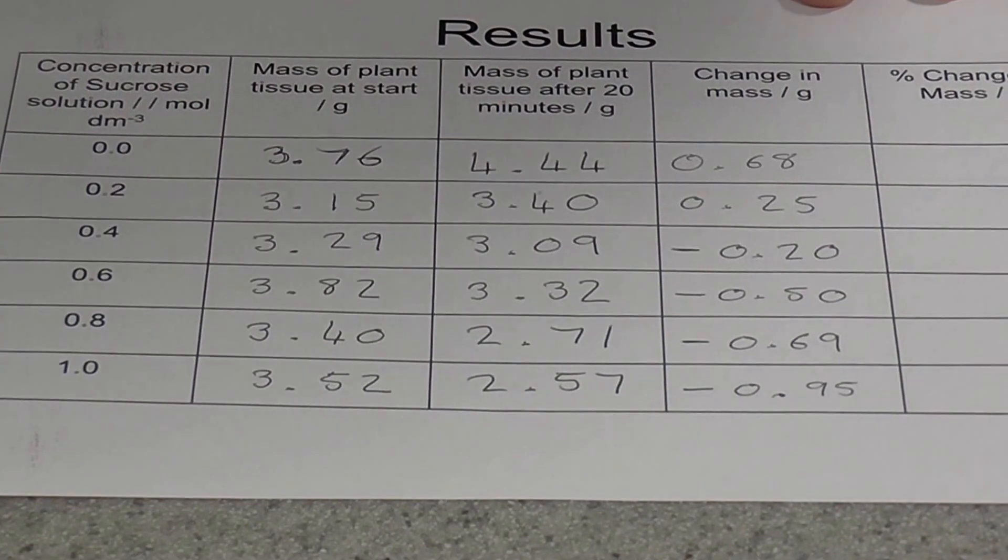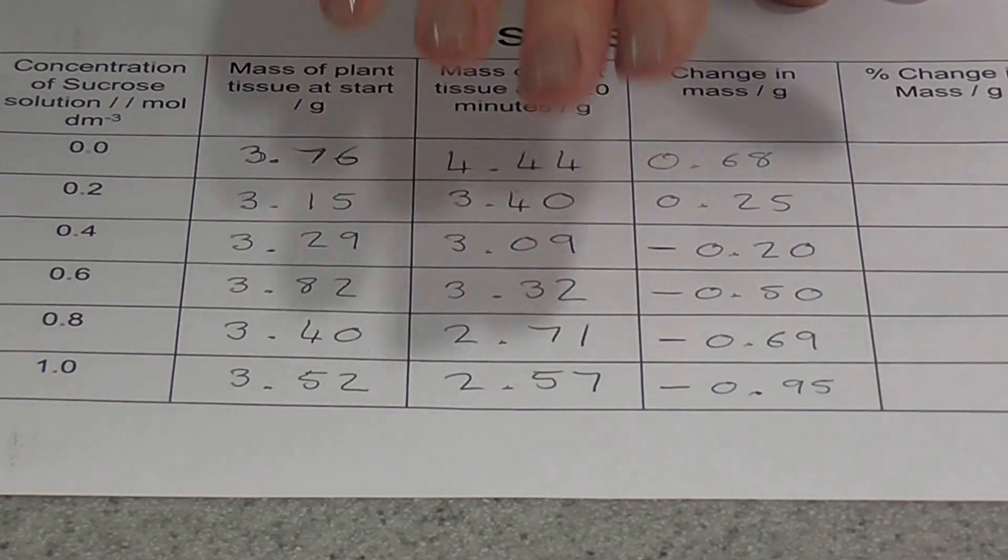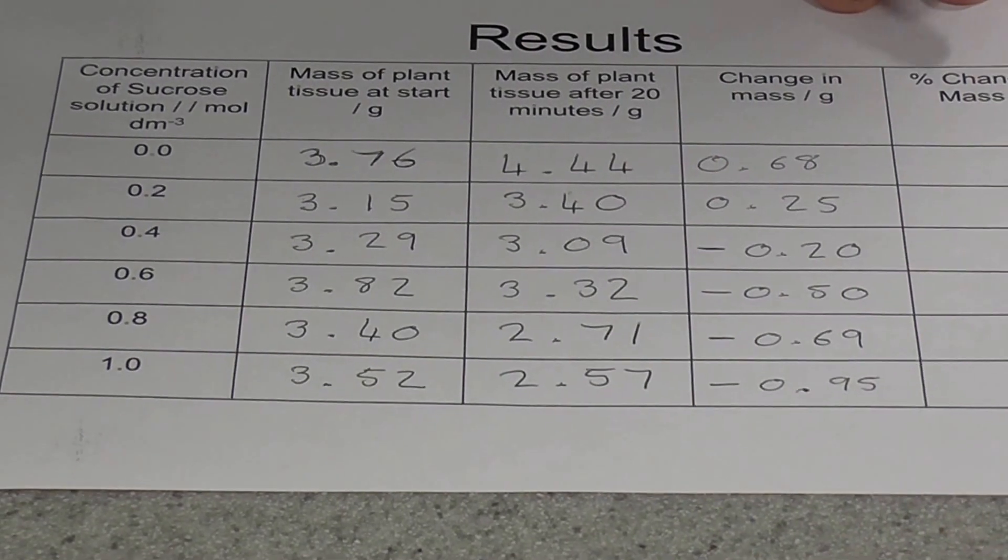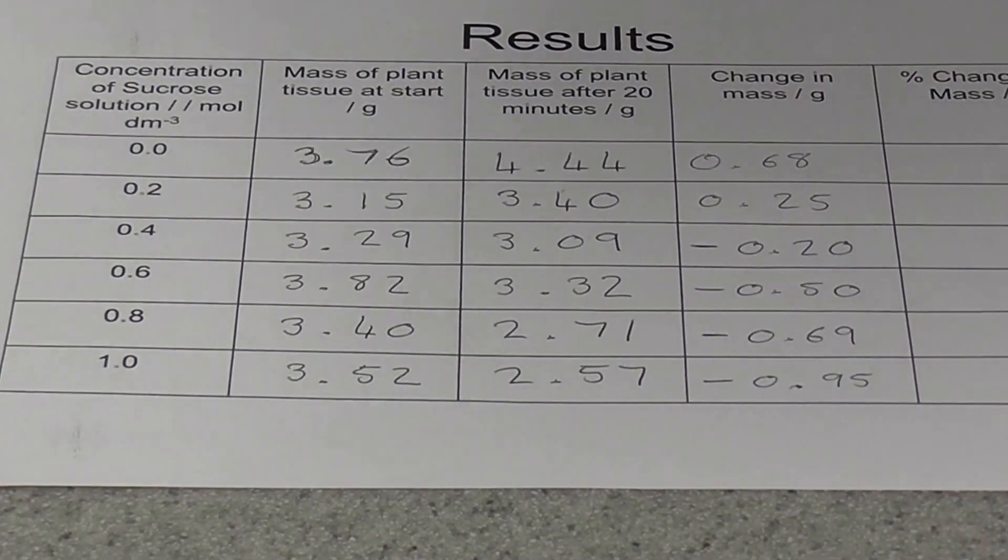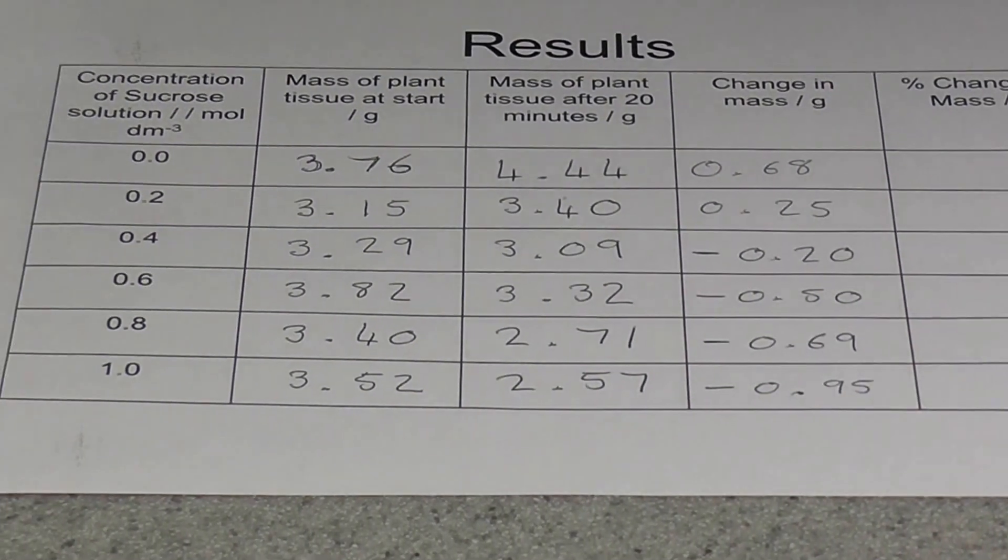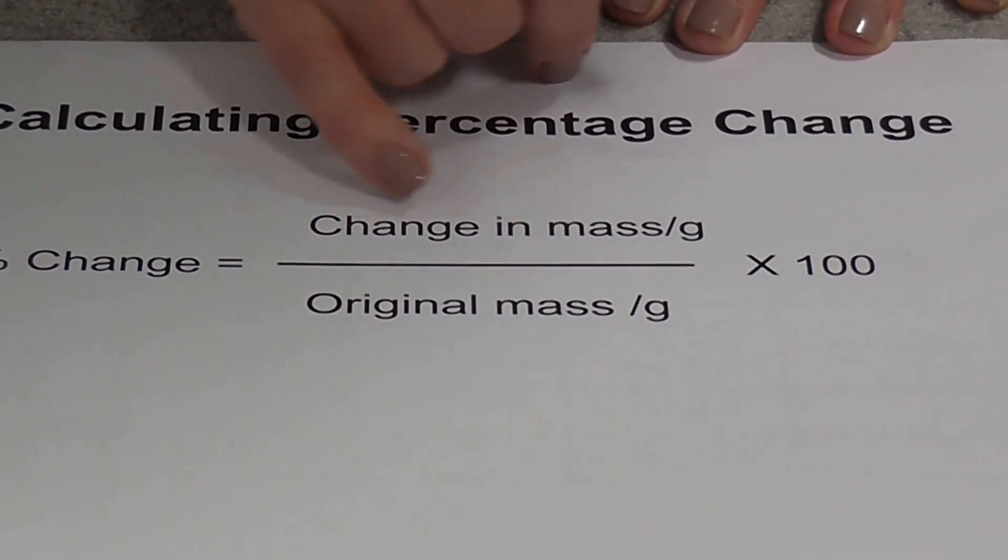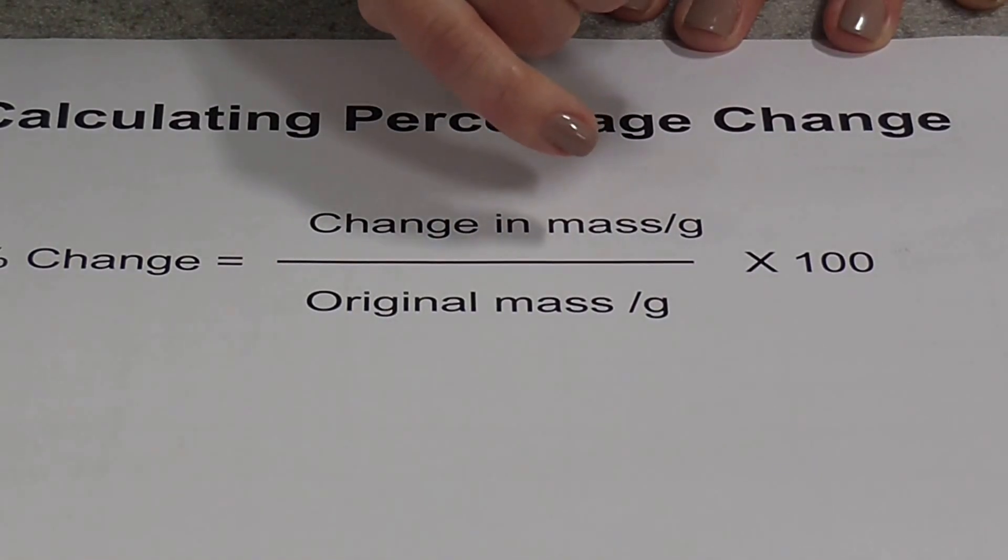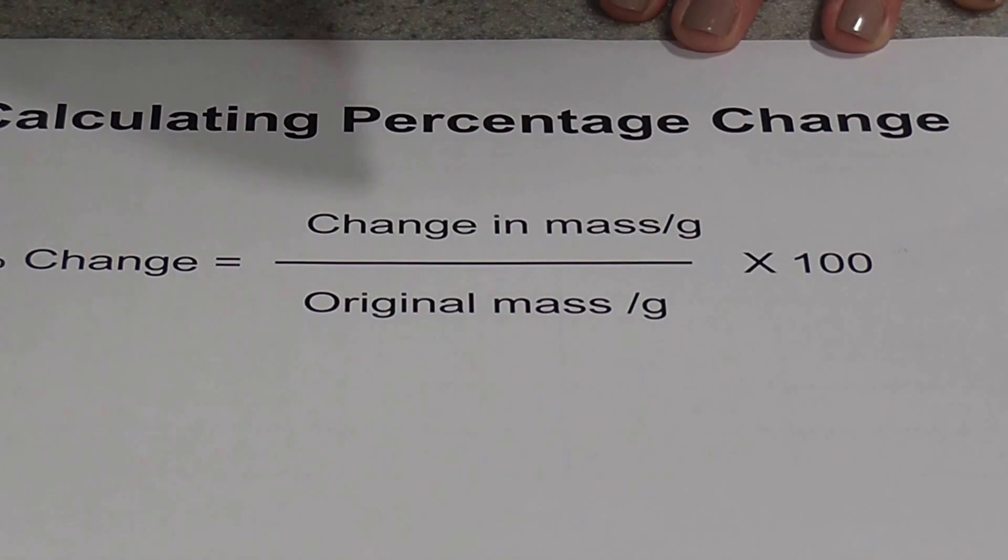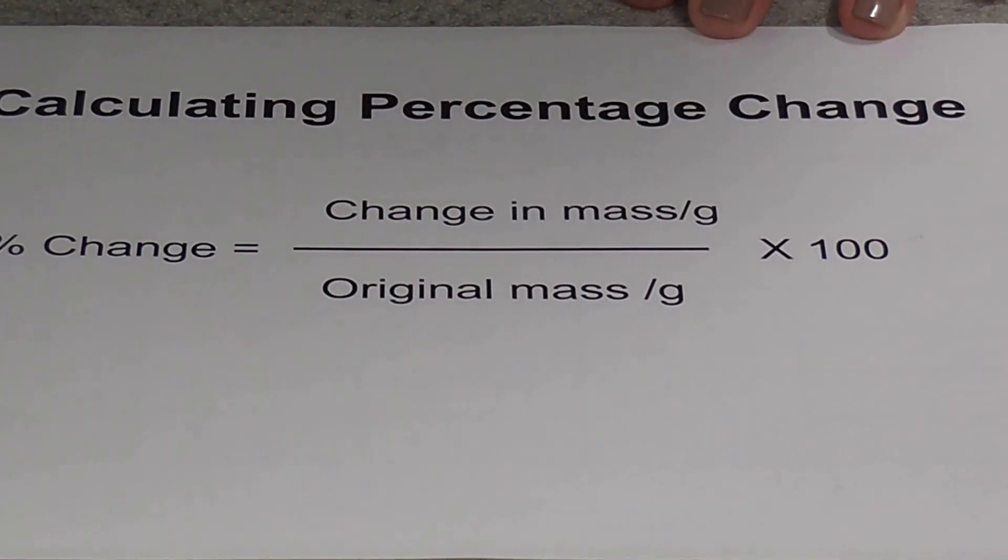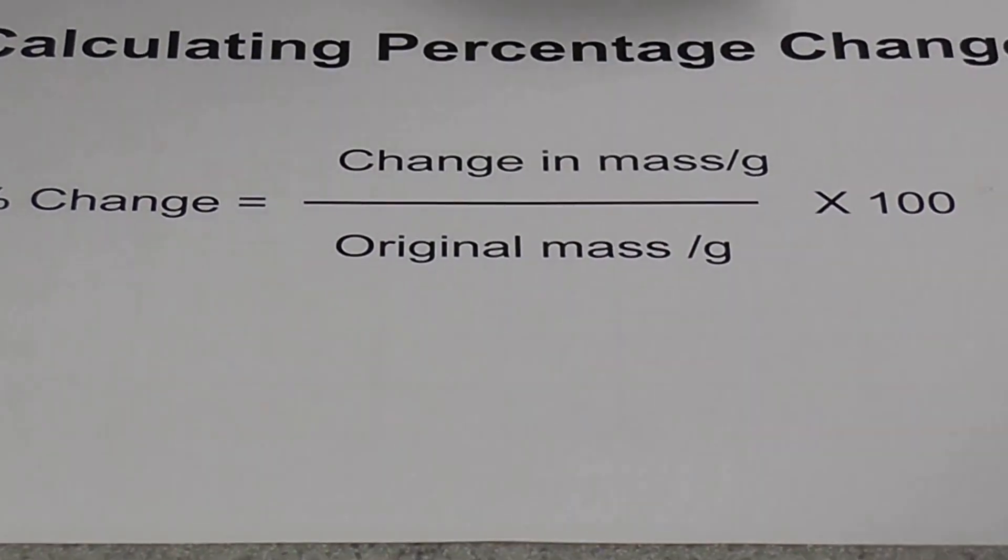If you want to compare the amount of mass gained or lost by the different chips, we're going to have to do a little bit more calculating. We're going to have to actually calculate the percentage change in mass. To calculate percentage change in mass, all we do, we actually use the change in mass, so the actual change that you've recorded, divide that by the original mass of the chip, and then multiply your answer by a hundred to turn it into a percentage. So I've done this here with the results.